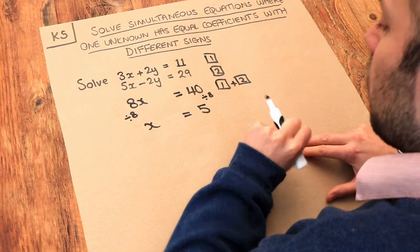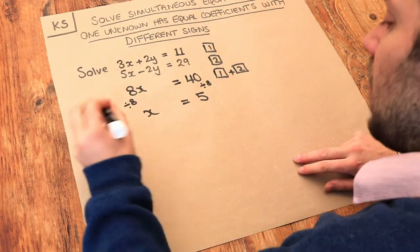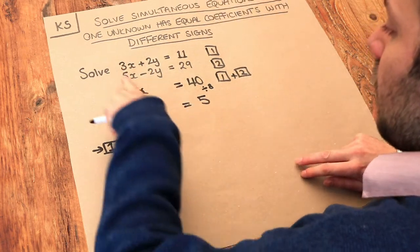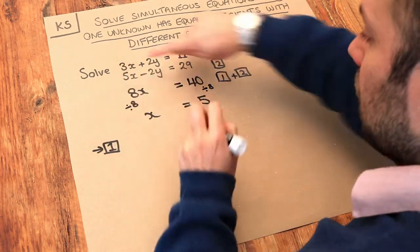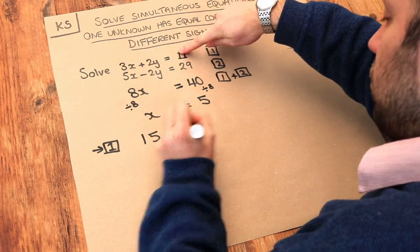And then to remember, the last step was to substitute that value we have into one of these equations. So if we just substitute into equation 1, it doesn't really matter which one. We've got 3 times x, 3 times 5, that's 15, plus the 2y is equal to 11.